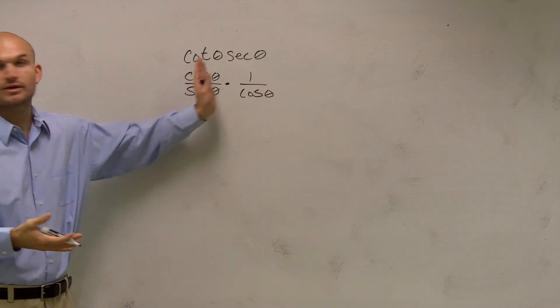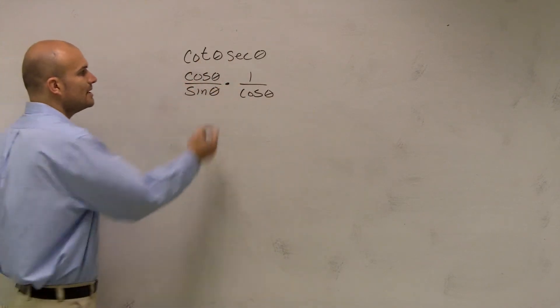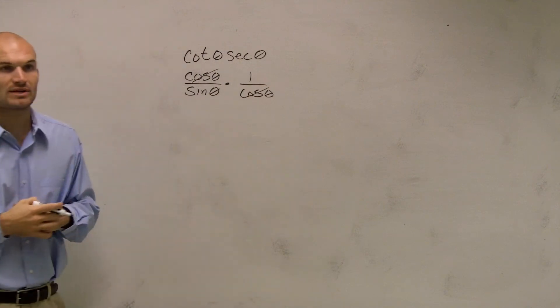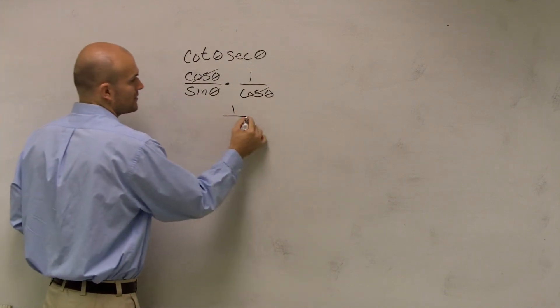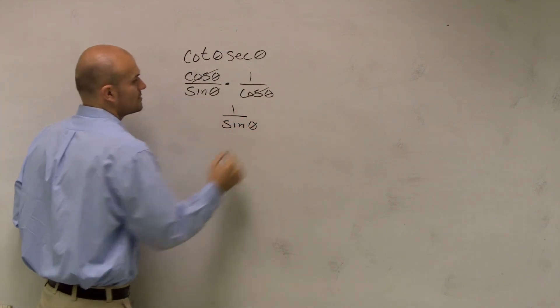So now what you notice, if you're going to multiply these across, what would happen is your cosines of theta would cancel out, and you'd just be left with 1 over sine of theta.